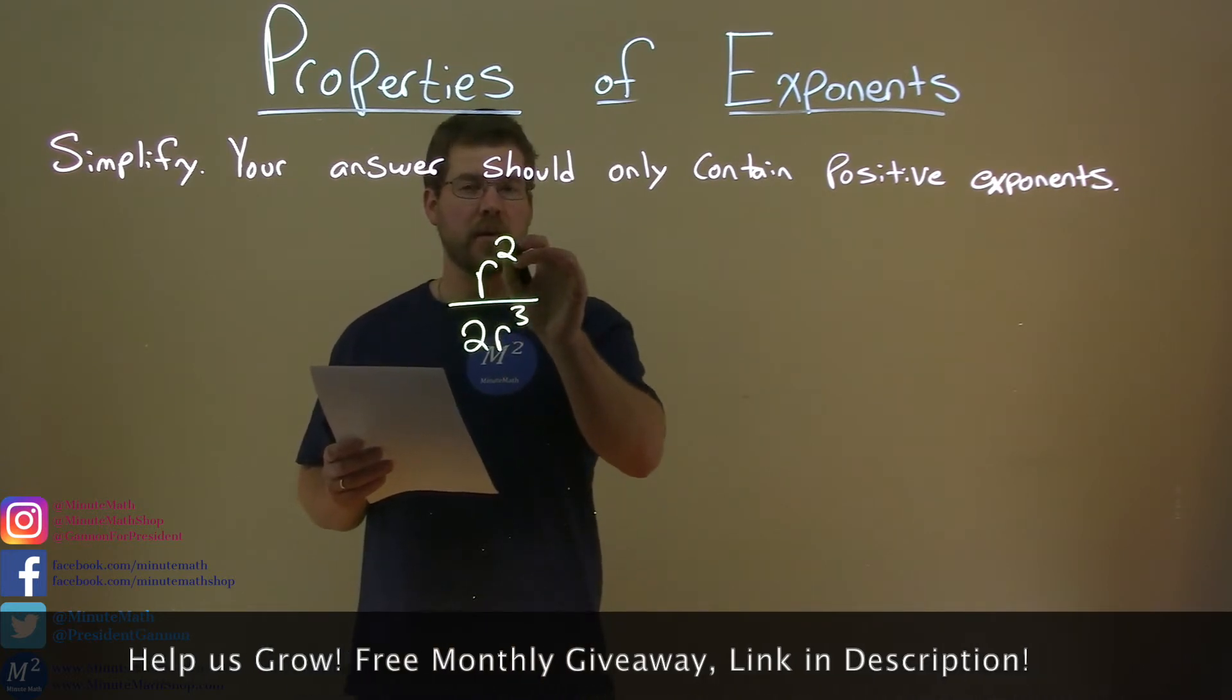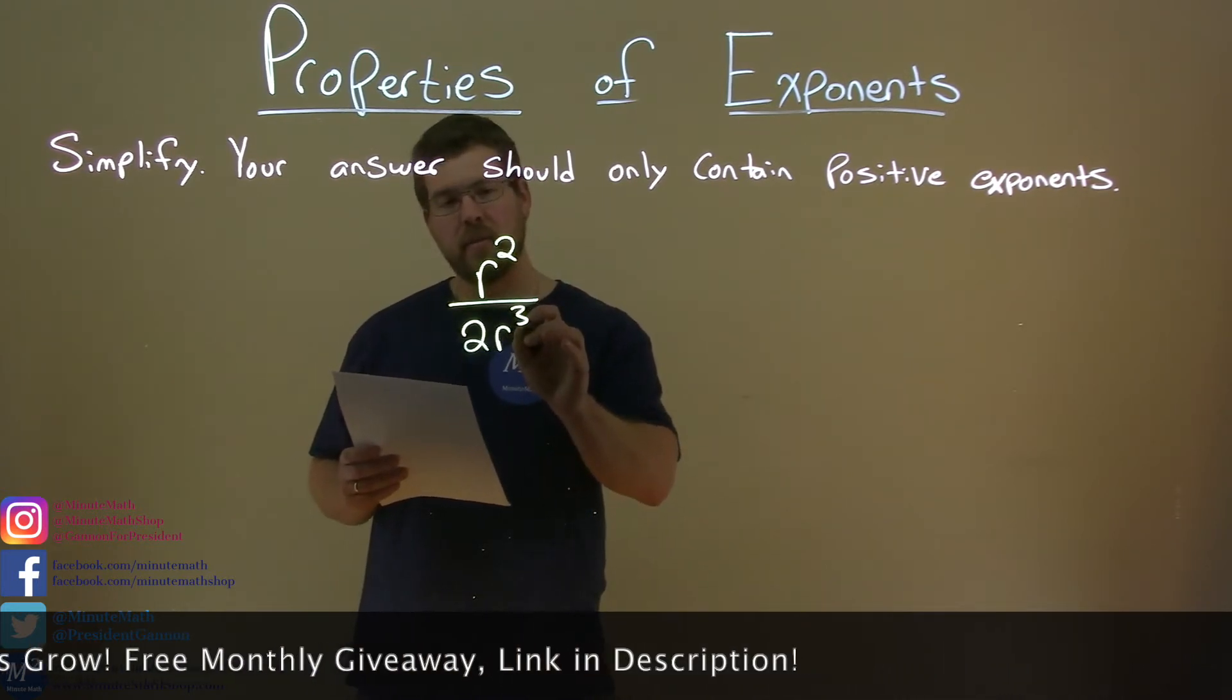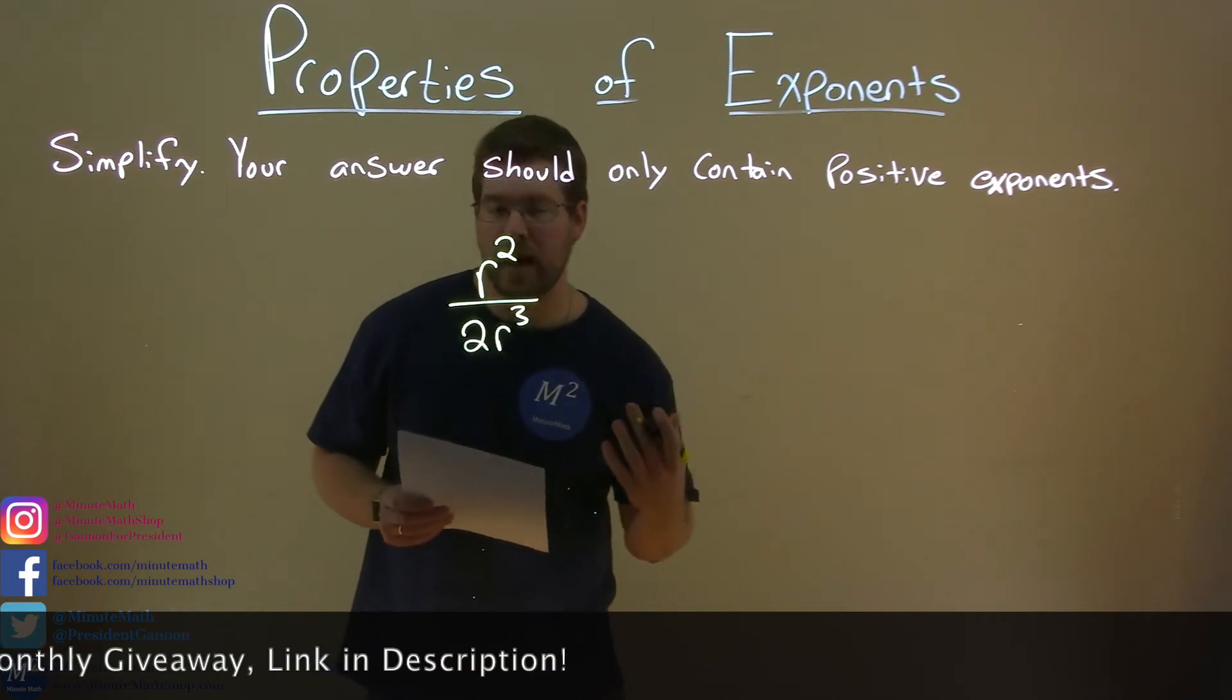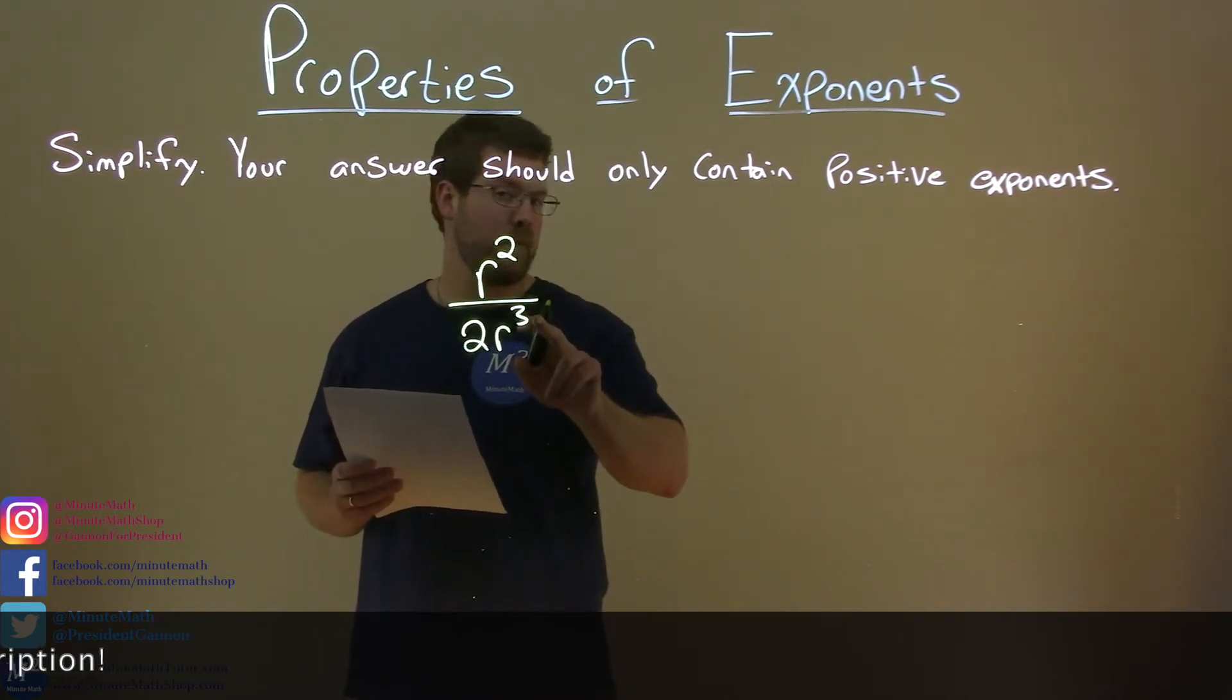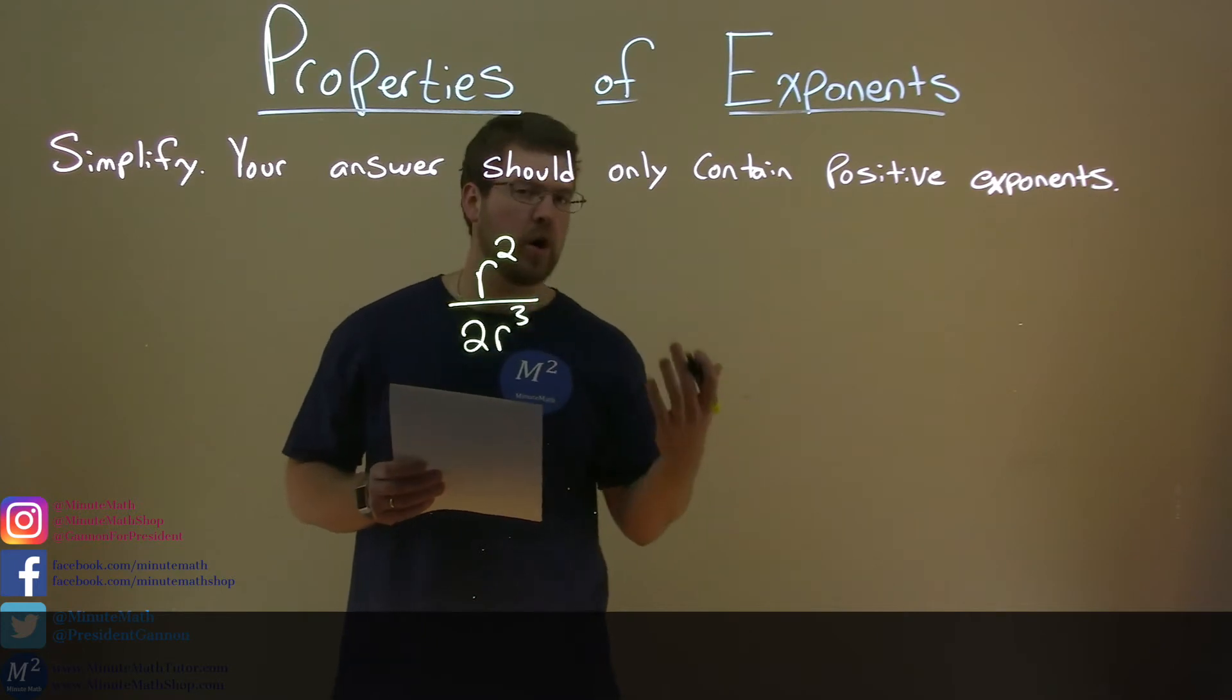We know r to the second power divided by r to the third power. When we see that, we subtract the exponents. So we take 2 minus 3, and we have a negative 1, so we should have r in the denominator.